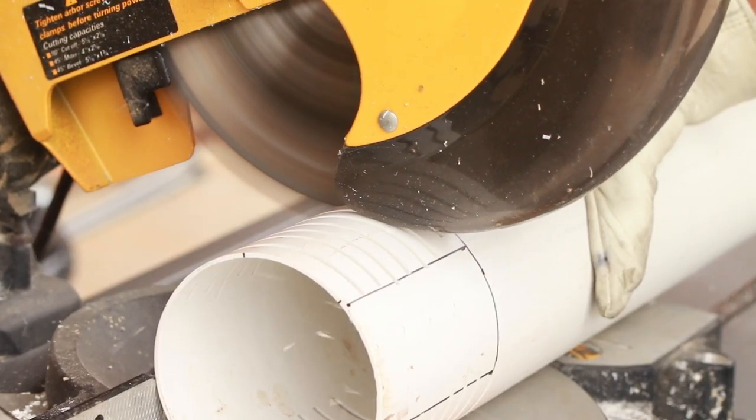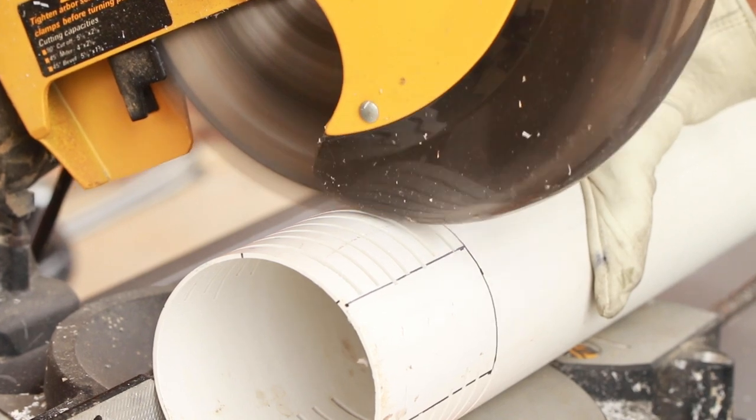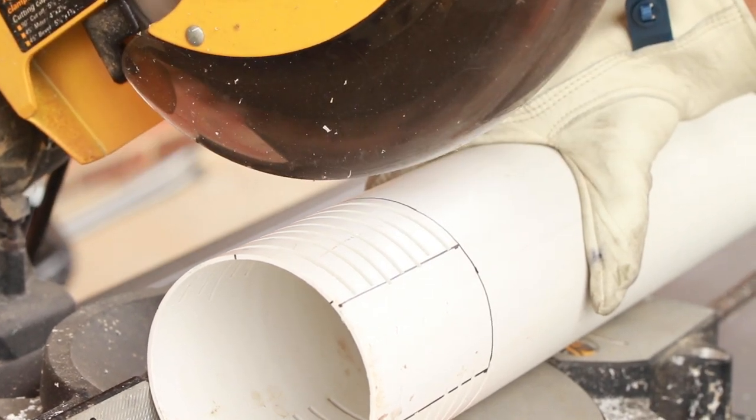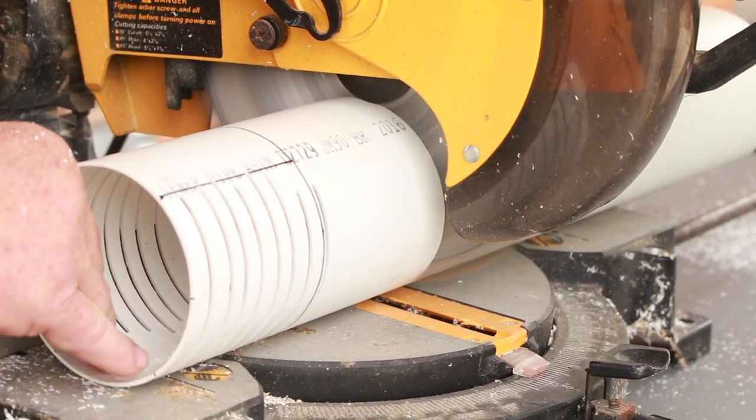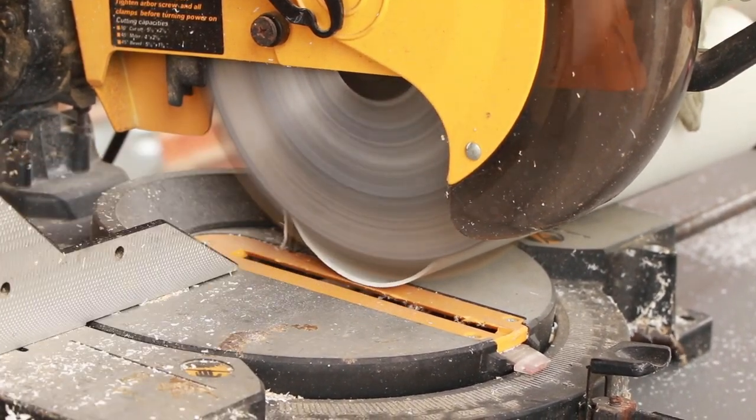Move to the next dot up the pipe and continue this process until you have 8 slits on either side of the pipe. This should allow enough water flow through the outer sleeve to enable the bell siphon to work properly.